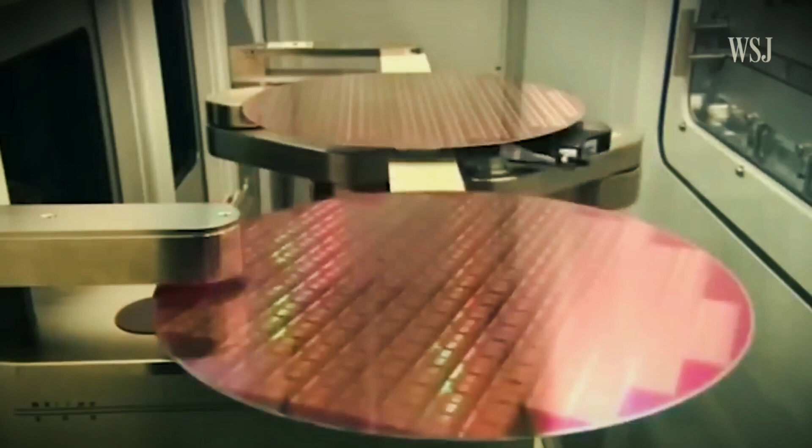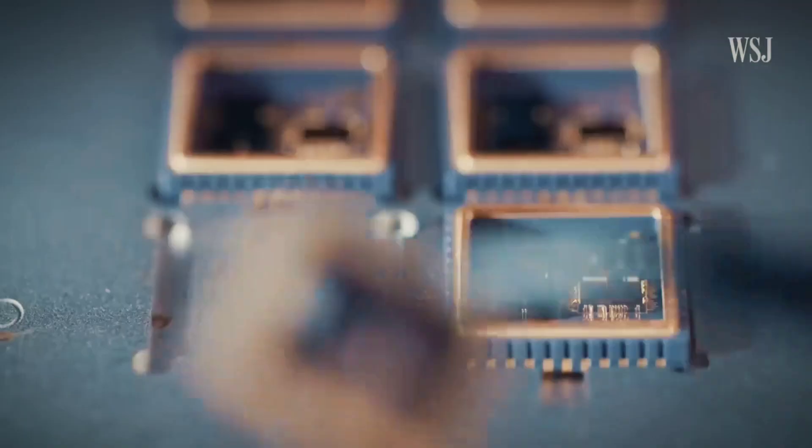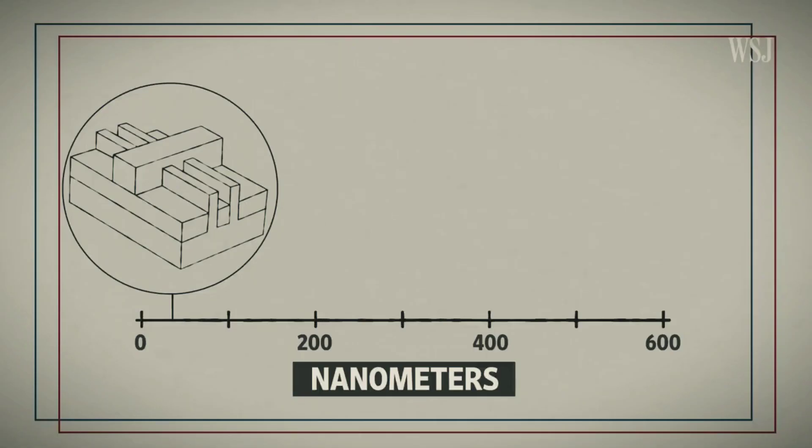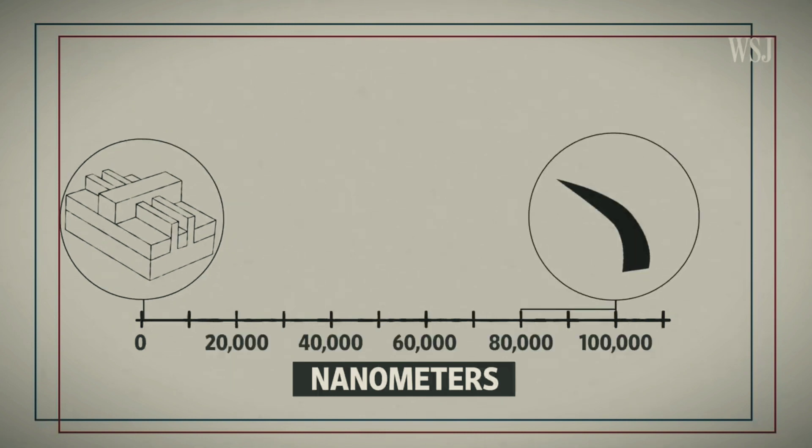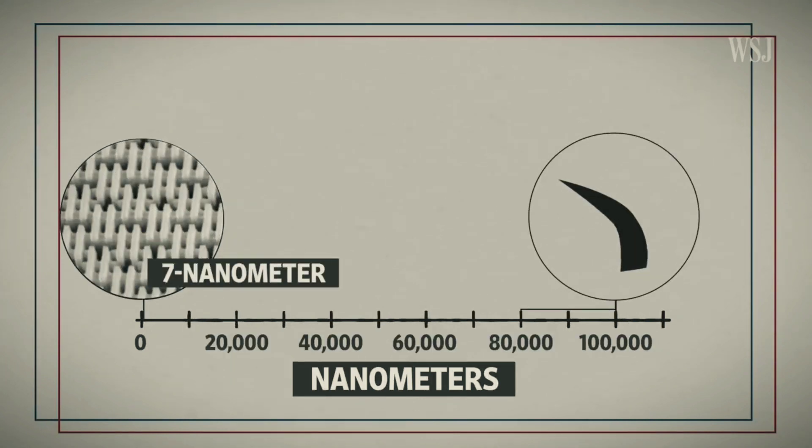Nanometers, or one billionth of a meter, is the unit of measurement used to describe the size, performance, and efficiency of semiconductors. The space between transistors on a semiconductor chip is referred to as its size. More transistors can fit into a chip of a smaller size, making the chip quicker and more powerful.